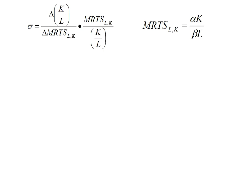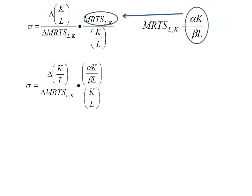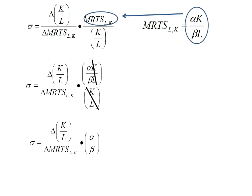Here I've got my simplified equation for sigma on the left and my MRTS on the right. I have the MRTS in the sigma equation, and now I know that MRTS equals alpha K over beta L, so I'm going to plug that in. Substituting alpha K over beta L, I've now got K over L in the numerator and K over L in the denominator — those cancel out. So sigma equals delta K/L over delta MRTS times alpha over beta.